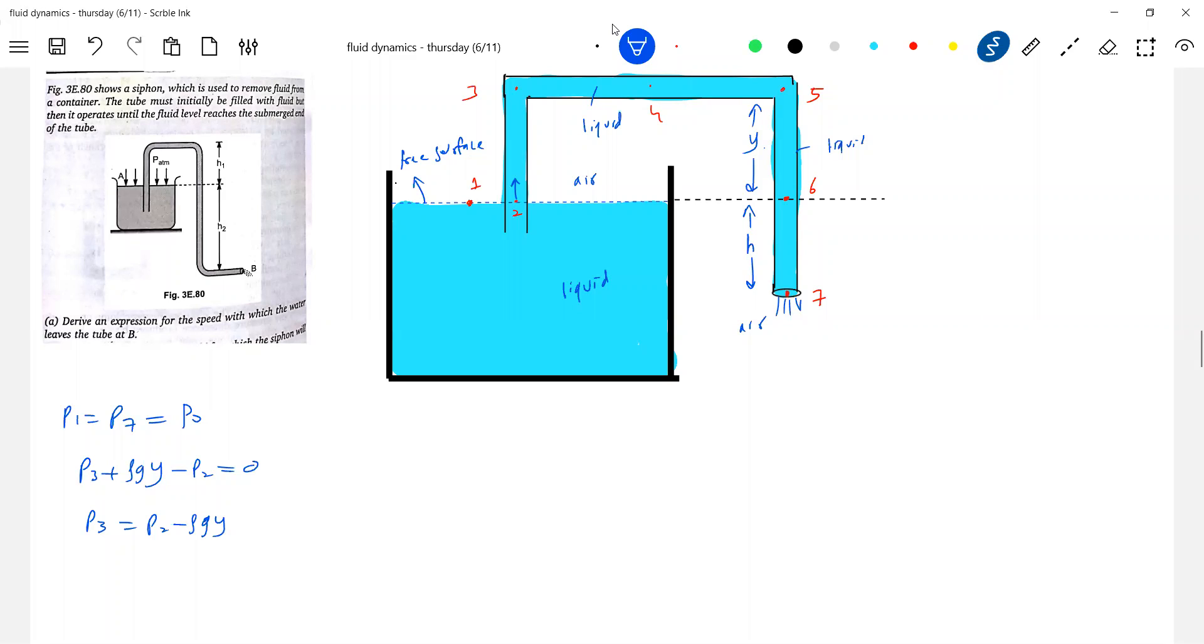So what is the state of the liquid? Here, everywhere the liquid will be in motion. It will emerge with a speed V. Everywhere the liquid will be in motion.